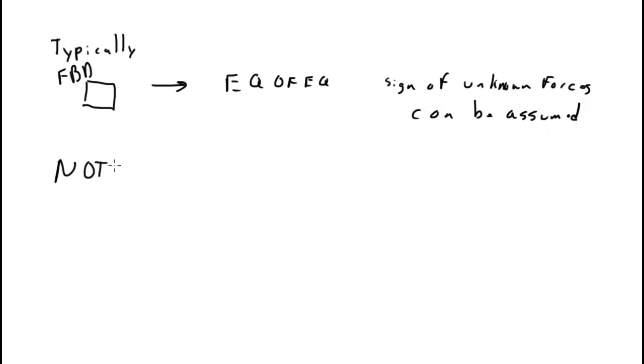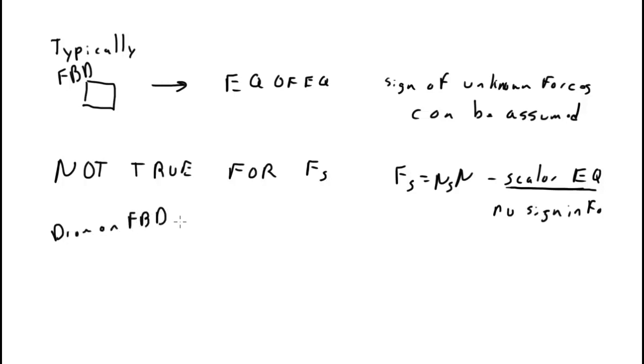Not true for FS. The reason is that FS equals mu S times N is a scalar equation. It comes about, there's no sign information included. So that means that you, when you draw a free body diagram, must draw FS opposing motion.